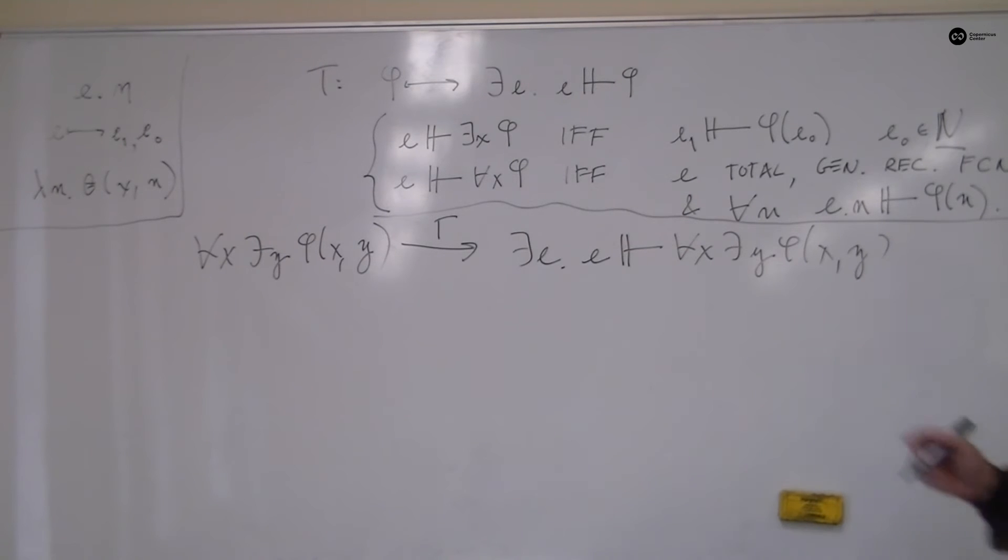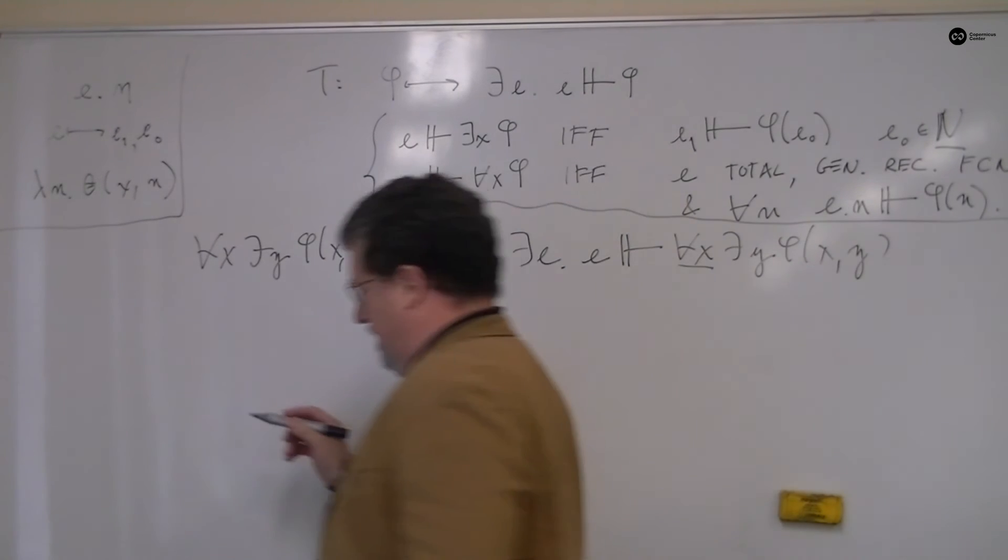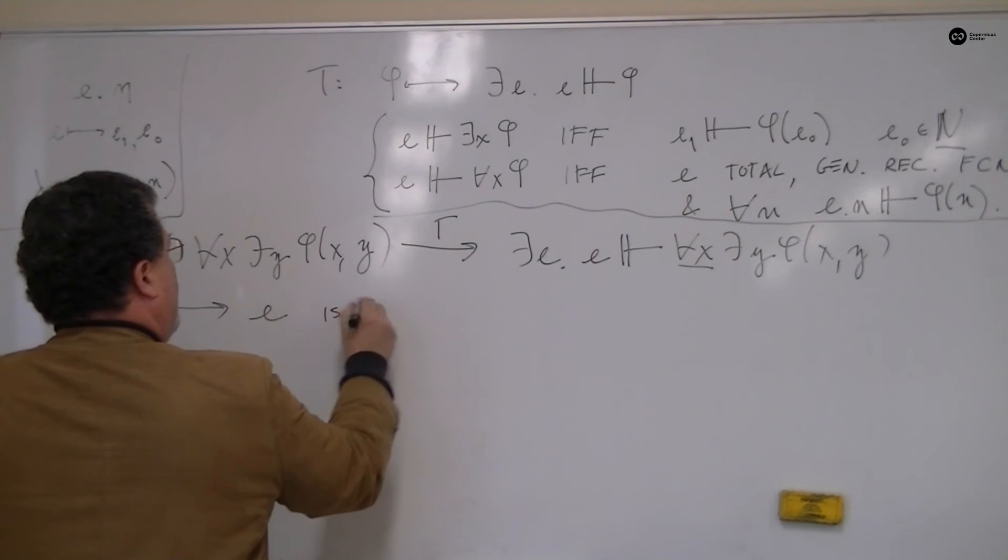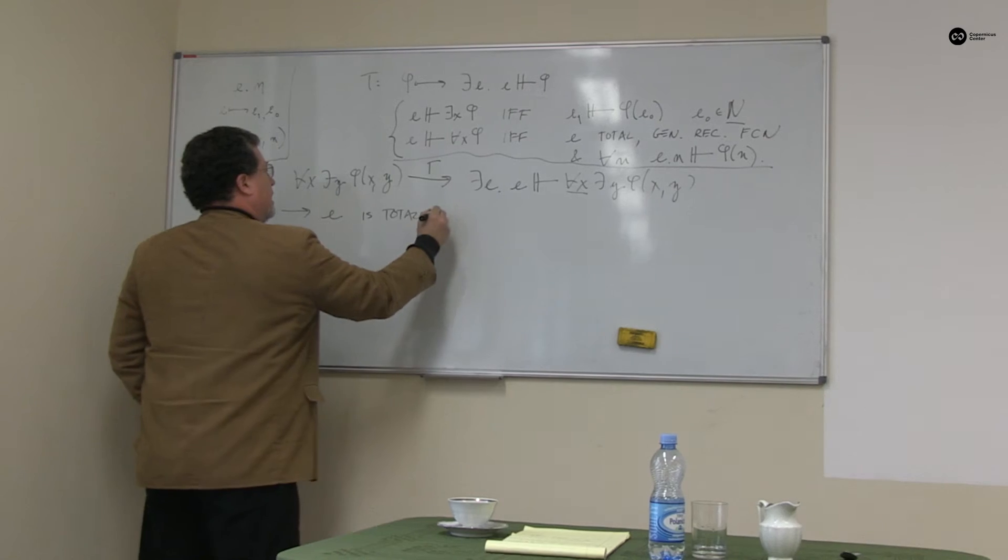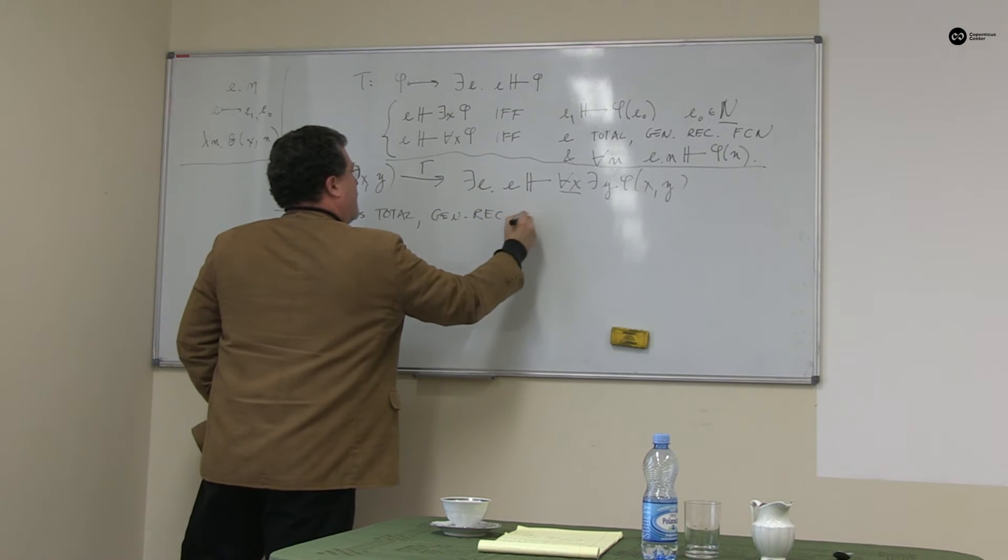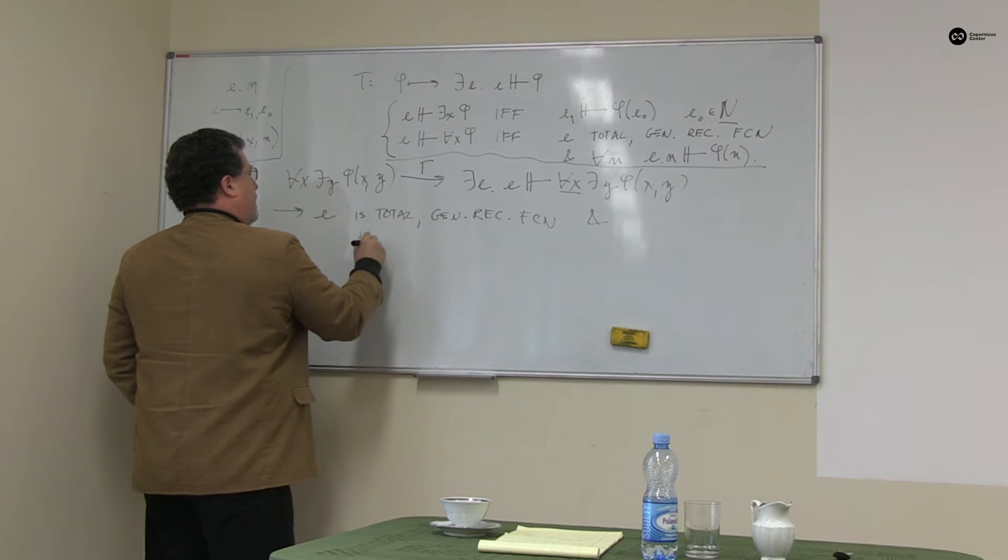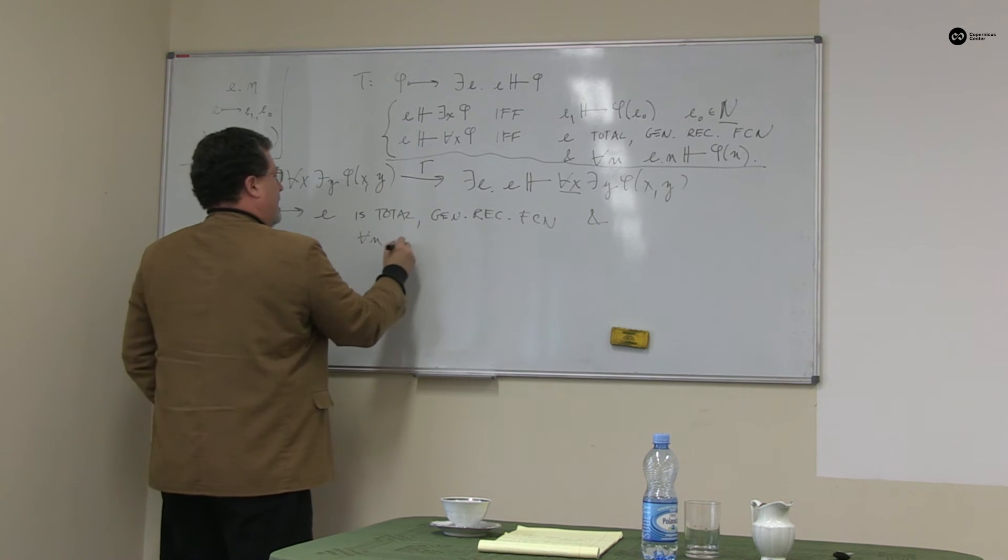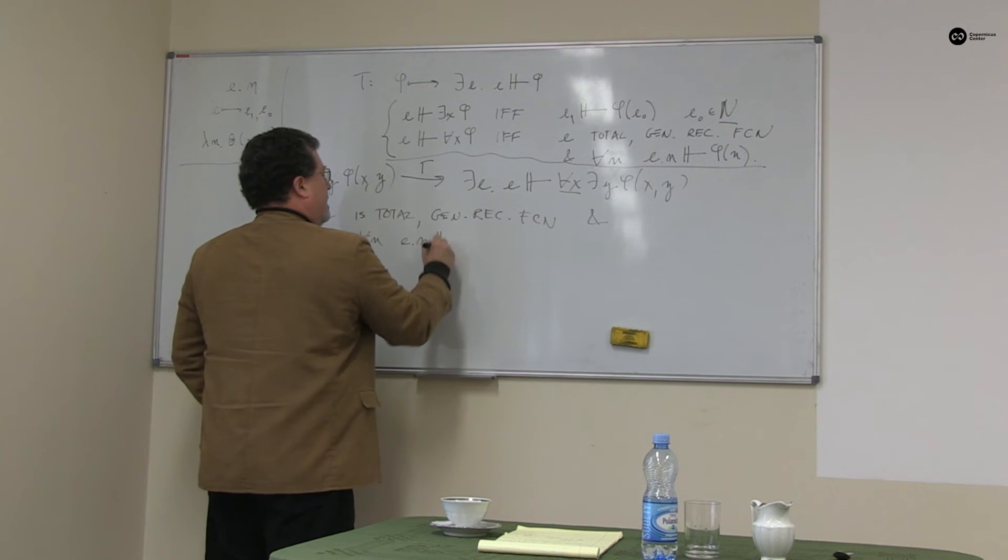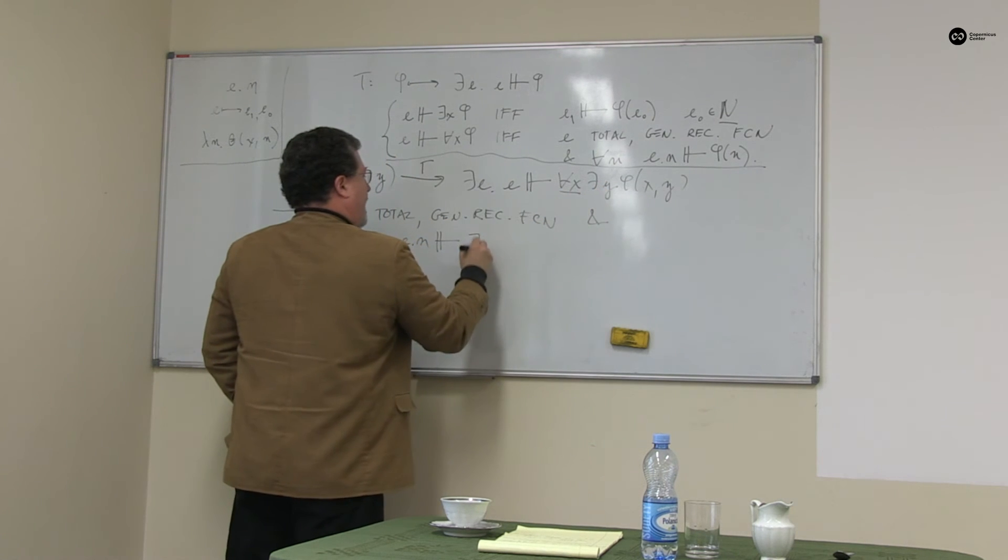And then it follows, here's a universal quantifier of numbers, from this part of the definition, that e is total, general recursive function of numbers, and for every natural number n, if I apply e to n and take the result, it gives me a construction of this with x replaced by n.